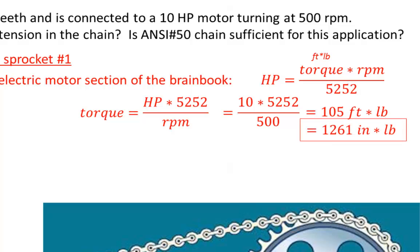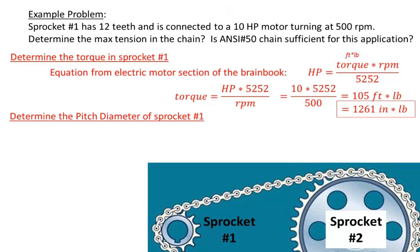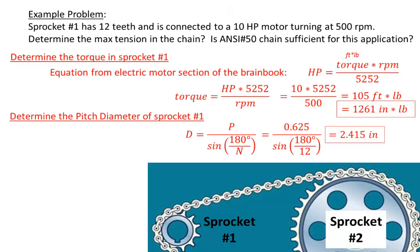We can multiply that by 12 to get the torque in inch-pounds. Next, let's calculate the pitch diameter of sprocket number 1 using the equation we just derived. Since we are considering ANSI number 50 chain, we look in the brain book to find that this chain has a pitch of 5/8 inch, or 0.625. Dividing by the sine of the angle, we find that the pitch diameter of this small sprocket is just over 2.4 inches.